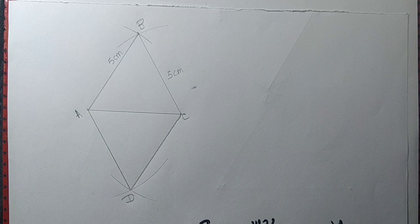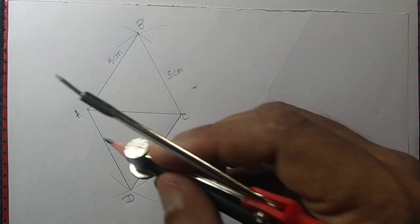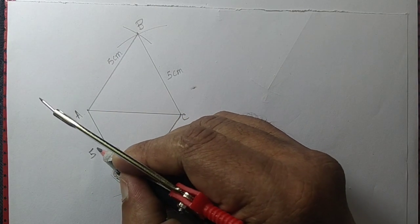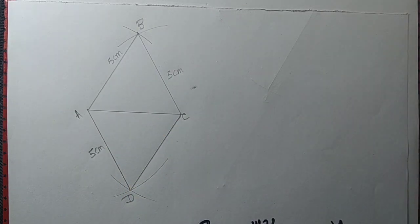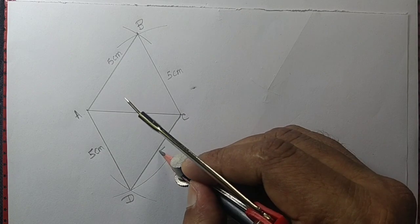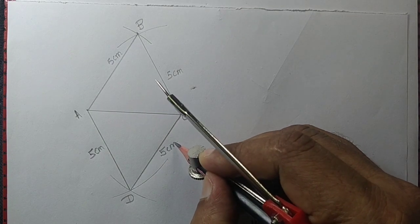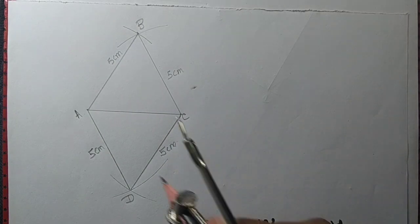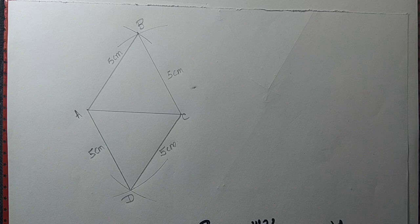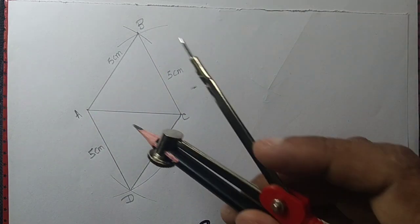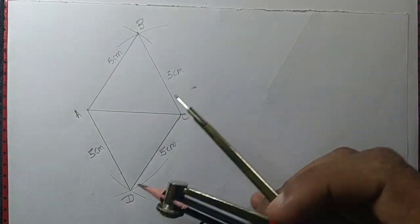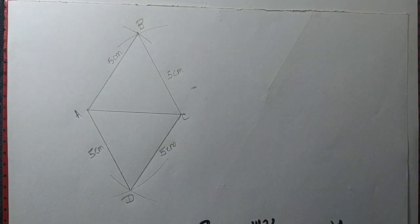Since we took the radius of the arc equal to 5 centimeters, AD equals 5 centimeters, and DC is also equal to 5 centimeters. In fact, triangle ACD is an equilateral triangle, triangle ABC is an equilateral triangle, and the quadrilateral ABCD is a rhombus.